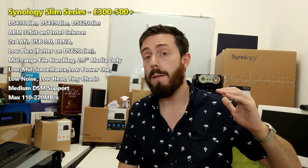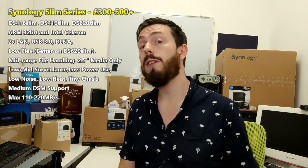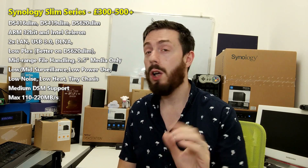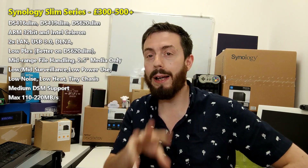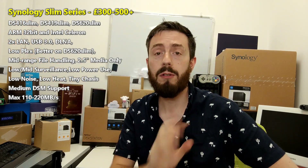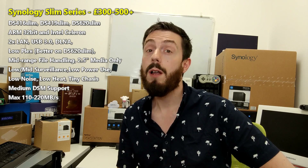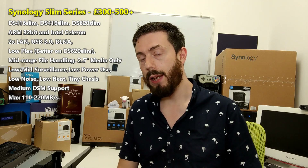The Slim series is an effectively compact NAS you can hide away — maybe in your attic, on a houseboat, or somewhere where power or space is limited. Currently it's the DS416 Slim and the DS419 Slim. There's a new one coming out, the DS620 Slim — a lovely little 6-bay Intel-based NAS, which is a huge leap forward.